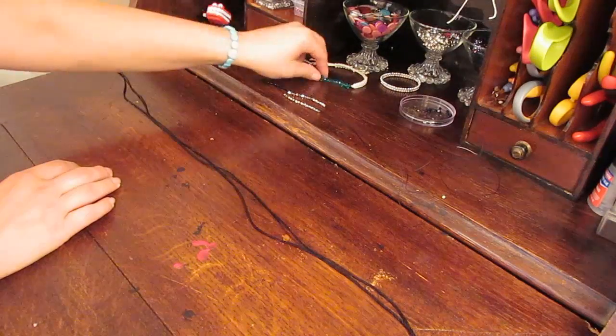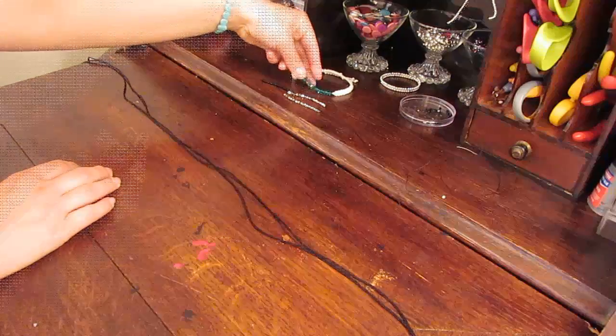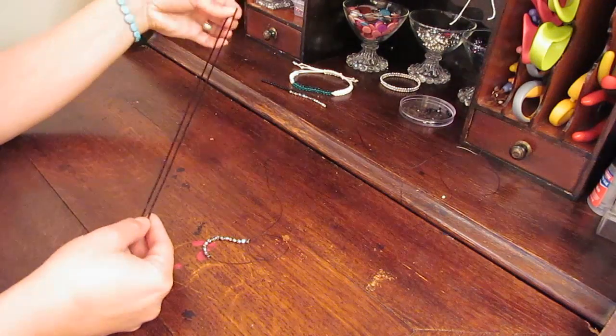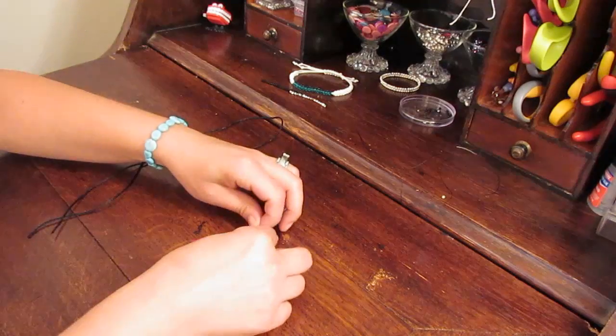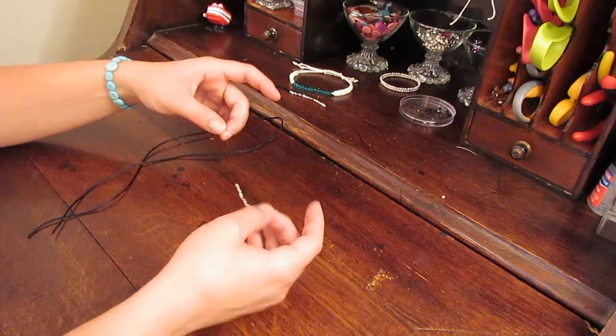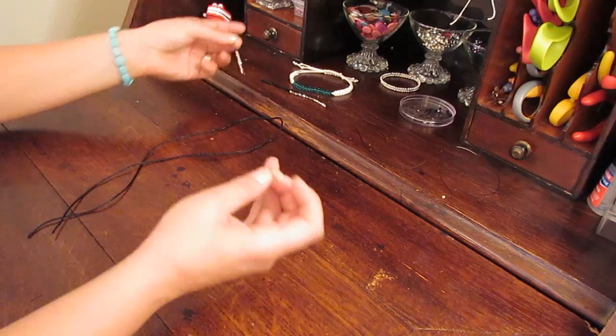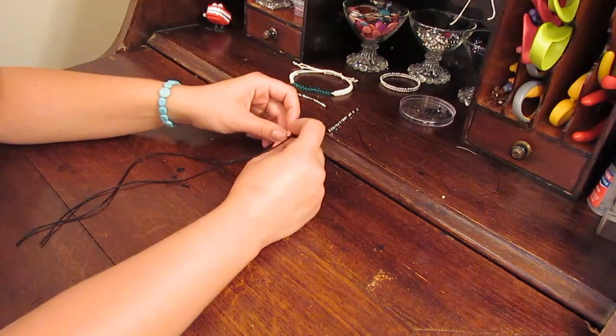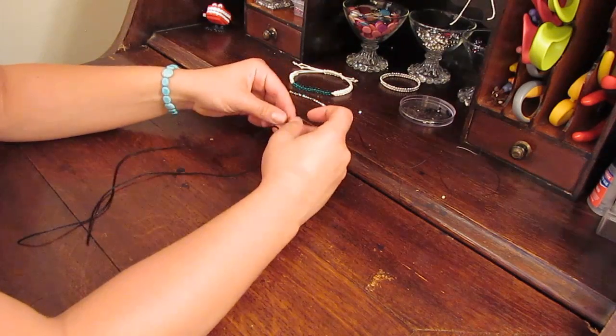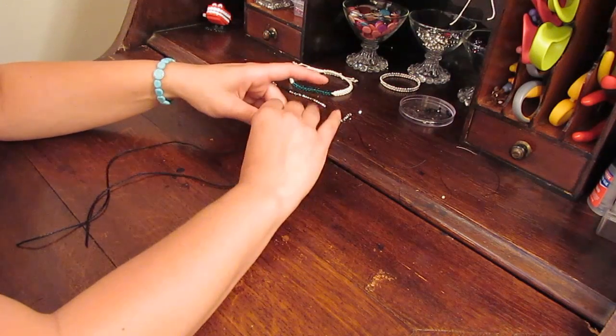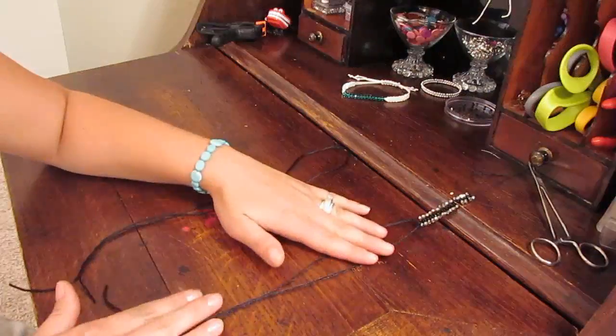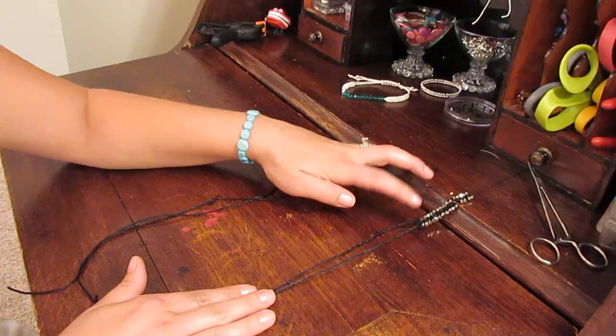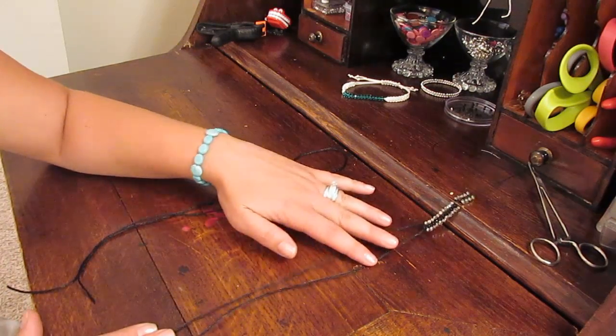This bracelet today is going to have three rows of the tiny beads. An 18 inch piece of rat tail cording, I've just folded it in half, and then I'm going to take my already pre-strung beads and I am going to tie this to the center of my 18 inches. You'll want to make sure that you tie this nice and secure. Now I have my three strands tied on to the middle of my 18 inch piece of cord.